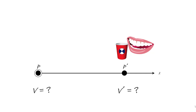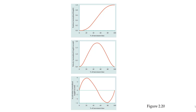However, the velocity cannot be zero throughout the entire time. If the velocity were zero throughout the entire time, the cup wouldn't move. So this is what our position, velocity, and acceleration curves look like during this simple task. Let's break these down and look at them a little more closely.